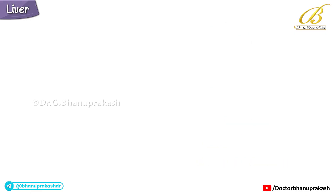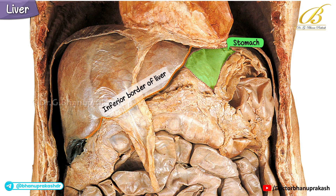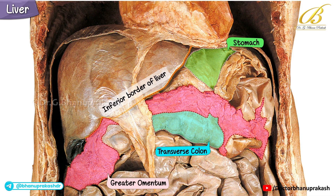Looking below the inferior border of the liver, from left to right, we can see three important structures lying in relation to it: the stomach, the transverse colon, and the greater omentum.